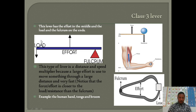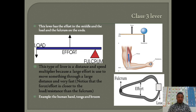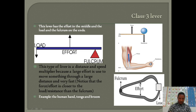Examples of class three levers include sugar tongs and a broom, where the effort is applied between the fulcrum and the load. You can move the load to a much longer distance and quickly. The fulcrum is on the outside, and the effort is actually in the middle between the fulcrum and the load.